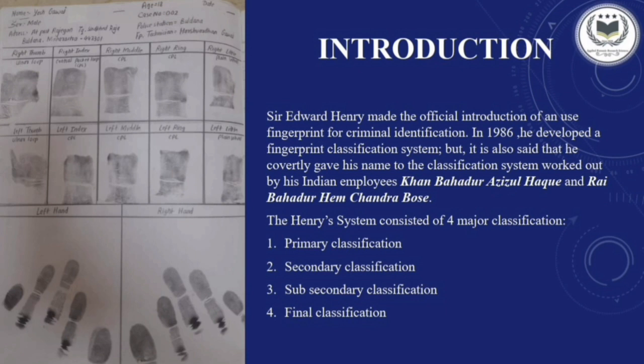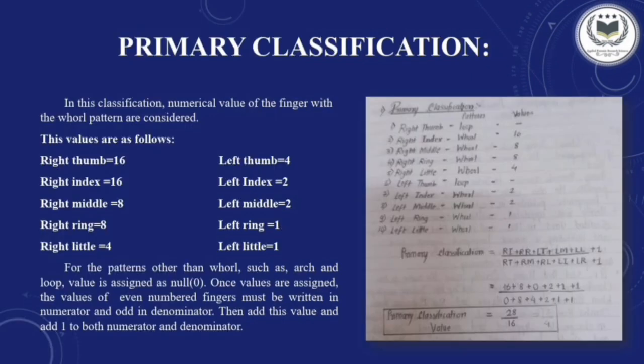The recorded fingerprint card has fingerprints that can be classified according to Henry's classification system, which consists of four major classes: primary classification, secondary classification, sub-secondary classification, and final classification. In primary classification, we consider all the fingers and assign numerical values to the whorl pattern. The values are: 16 for right thumb and right index; 8 for right middle and right ring; 4 for right little and left thumb; 2 for left index and left middle; and 1 for left ring and left little finger.